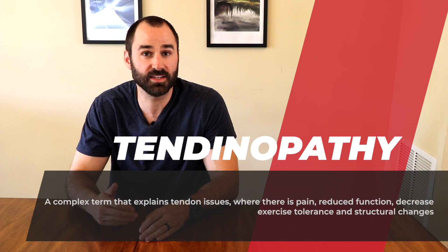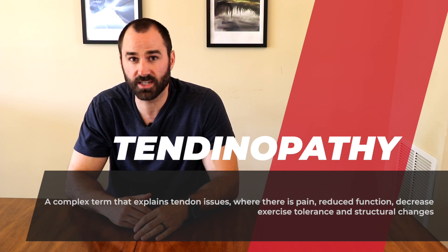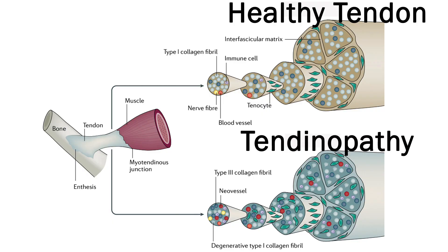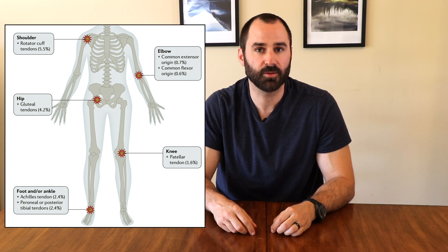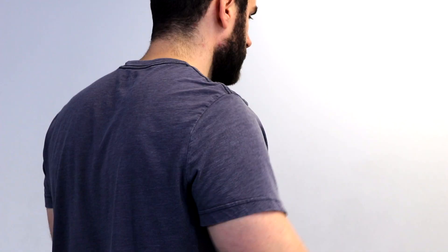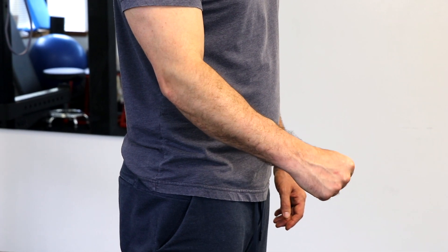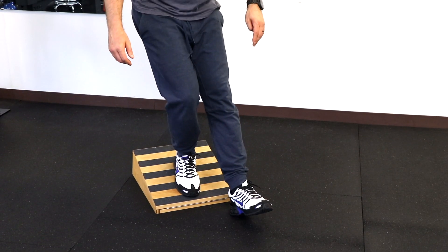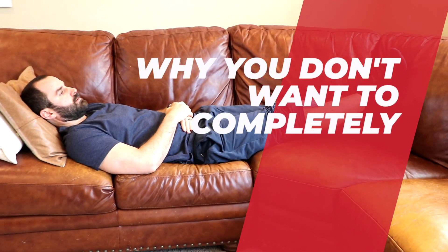Tendinopathy is a term that seems more appropriate. It is a broad-spectrum definition that basically means there is tendon pain, reduced function, and decreased exercise tolerance — essentially where the capacity of the tendon can't handle the load being placed on it, and it varies for each person. Tendinopathy most commonly affects the upper and lower extremity, most notably the rotator cuff tendon, the forearm flexor and extensor tendons, the gluteal tendon, the patella tendon, and the Achilles tendon. Diagnosis is mostly clinical, based on history, tenderness with palpation, and pain-related loading. Routine imaging is not recommended and often doesn't change management or rehabilitation strategies.